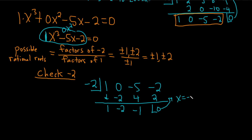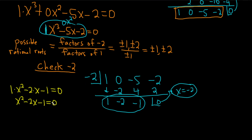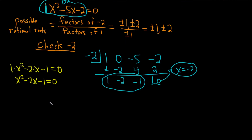We get a remainder of 0, so x equals negative 2 is one of our roots. Whenever you get a remainder of 0, that's one of your roots. Now this was a cubic, so we start at one degree less — squared. We get 1 times x squared minus 2 times x minus 1 equals 0, which gives us x squared minus 2x minus 1 equals 0. This looks like it might factor nicely, but it doesn't.